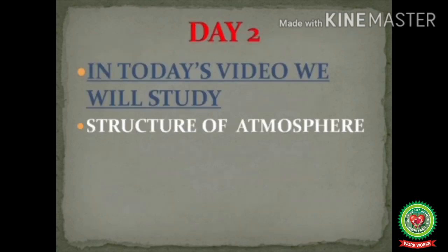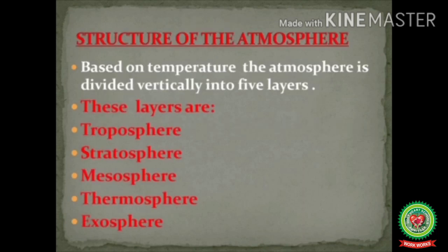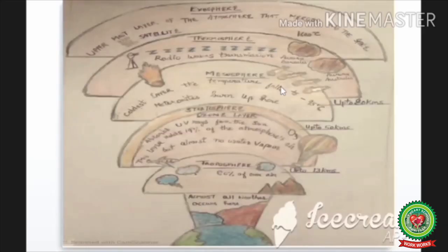Let's start with the topic: structure of atmosphere. Based on temperature, the atmosphere is vertically divided into 5 layers — troposphere, stratosphere, mesosphere, and thermosphere. Let's understand this with the help of a diagram.